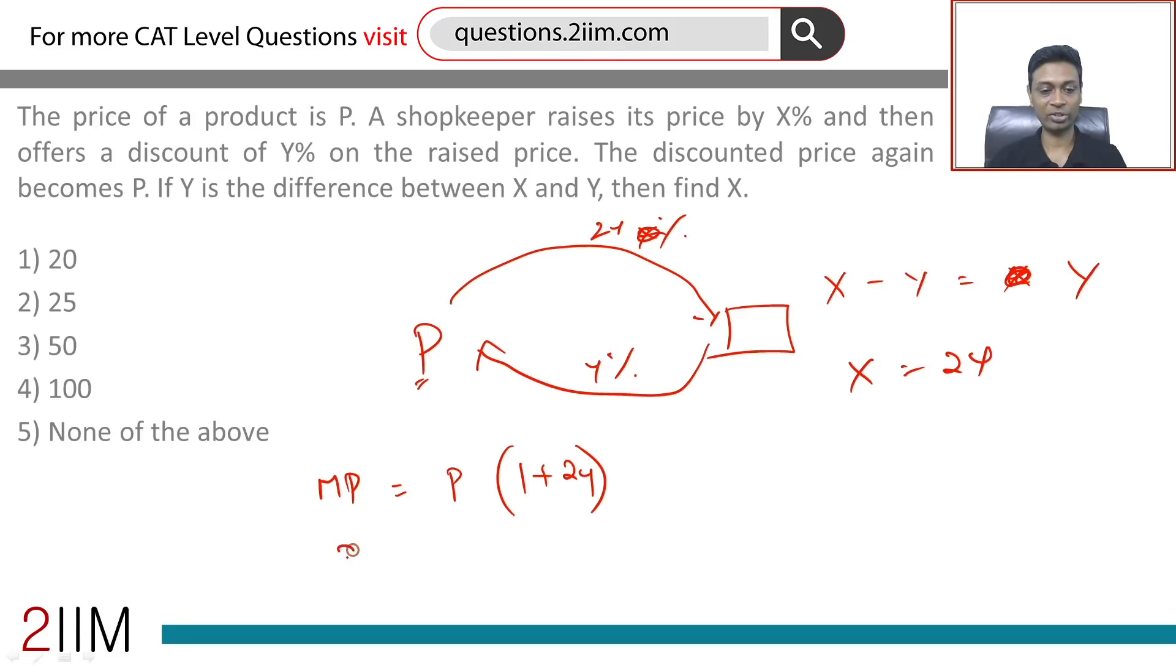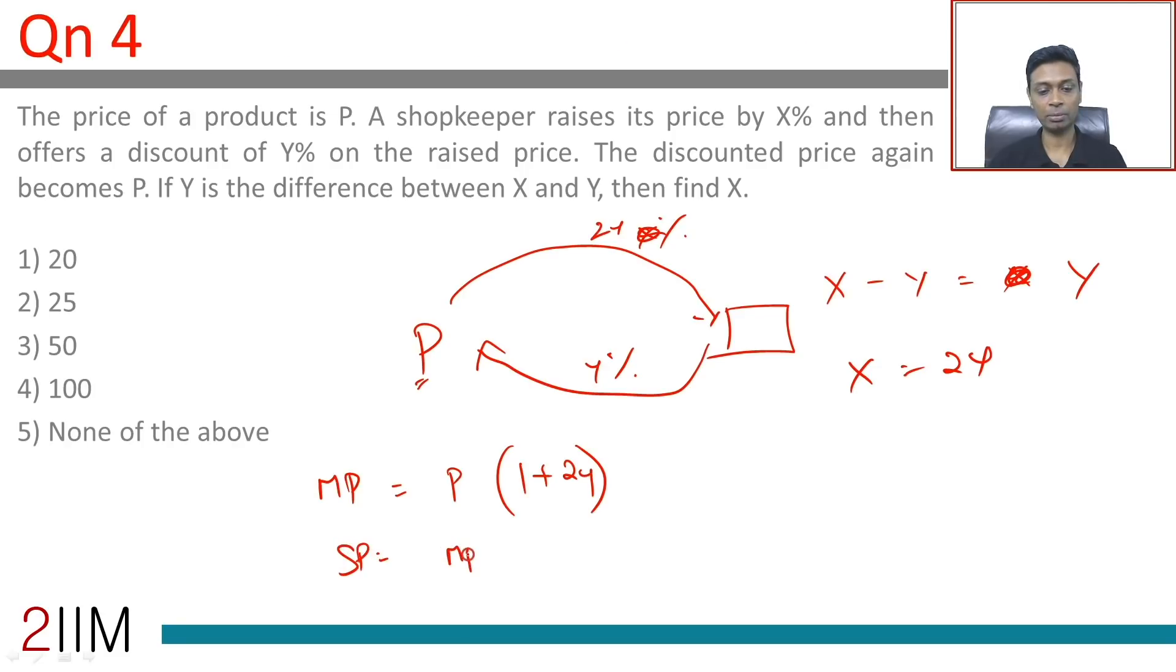Now back to the selling price, that is mark price into 1 minus Y. This is given to be our cost price or our price P. So P into 1 plus 2Y into 1 minus Y.